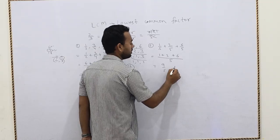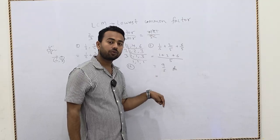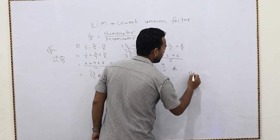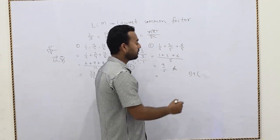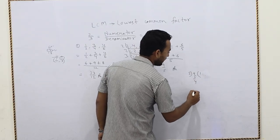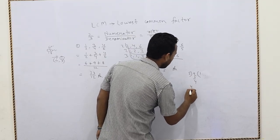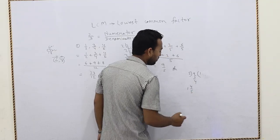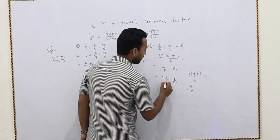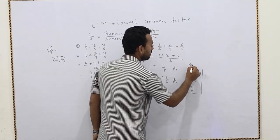This answer 9/5 is an improper fraction. We can convert it to a mixed fraction. We divide: 5 goes into 9 once with a remainder of 4. So the mixed fraction is 1 and 4/5. This is the correct answer. You can do this division on the rough side.